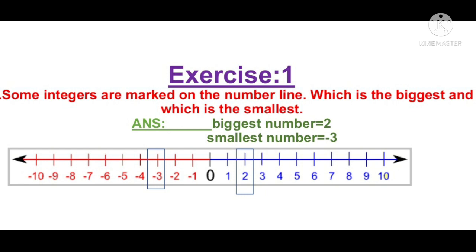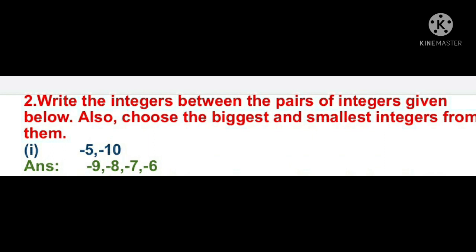Next question: write the integers between the given pair of integers and identify the biggest and smallest. The pair is −5 and −10. Here −5 is on the right side and −10 is on the left side. The integers in between are −9, −8, −7, and −6. So the answer is −9, −8, −7, −6. From these four, the smallest number is −9 and the biggest number is −6. The remaining problems are homework.